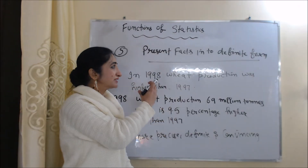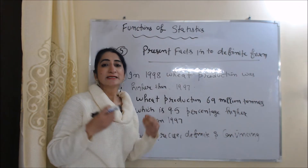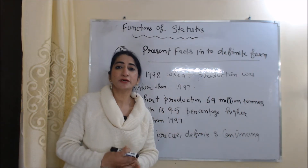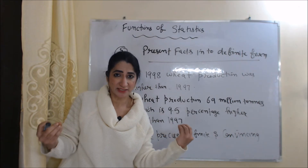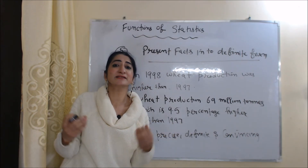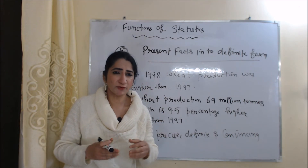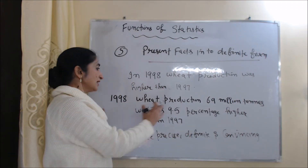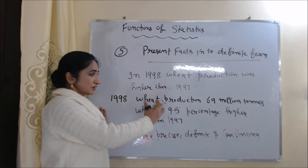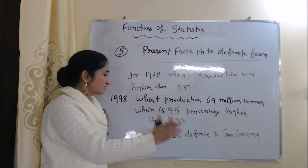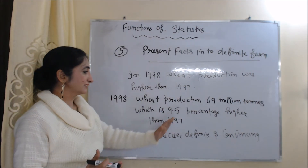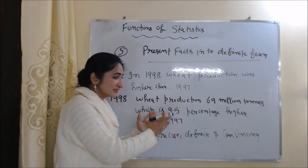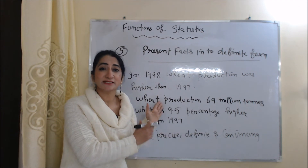The next function is to present facts in a definite form. Statistics give us information in a precise and definite form. For example, saying 'wheat production was higher in 1998 than 1997' is not in definite form, but saying 'wheat production in 1998 was 69 million tons, which is 9.5% higher than 1997' — this information is more precise, definite and convincing. This is our statistical information.